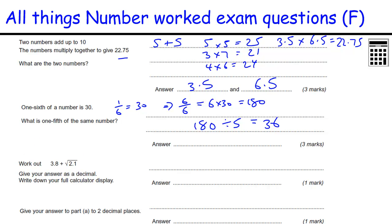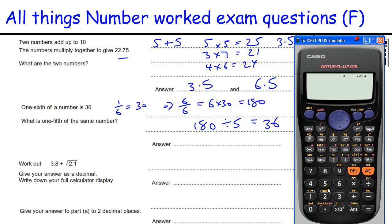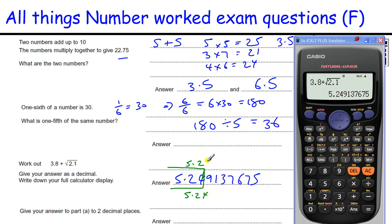Okay, and then we've got to work this out. 3.8 plus the square root of 2.1. And you've got to leave your answer as a decimal. Write down your full calculator display, so that's 5.249137675. Now to two decimal places, two decimal places is this part of the number here, so 5.24. And we've got to decide, is that going to be just 5.24, or is it going to be 5.25? And because this is a 9, it's going to round up to 5.25.